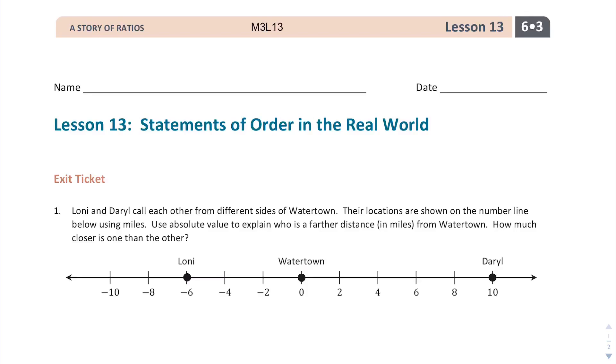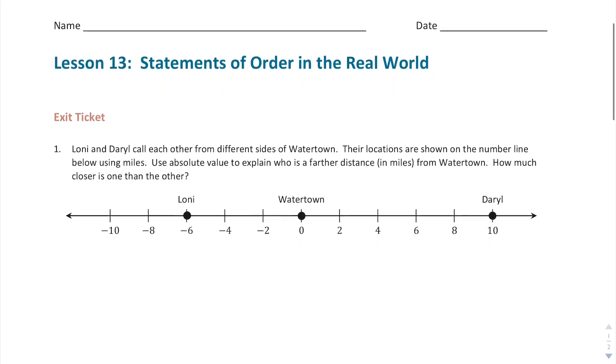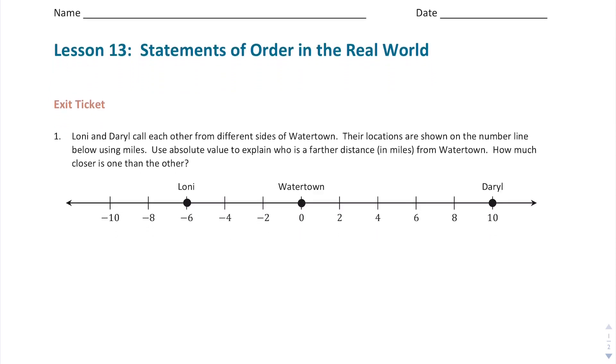So the question is asking, use absolute value to explain who is a farther distance from Watertown and how much closer is one than the other? Well, first of all, let's use absolute value. I pretty much called it out that Lonnie is six miles away. That's because Lonnie's absolute value is equal to six. Then we have Daryl. Daryl is 10 miles away, and that's represented as the absolute value of 10, which is equal to 10.